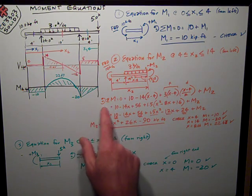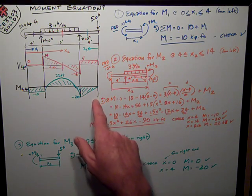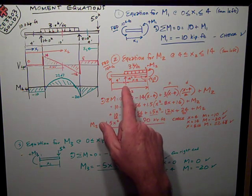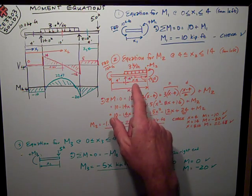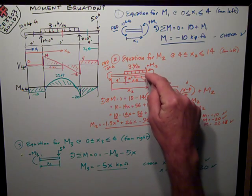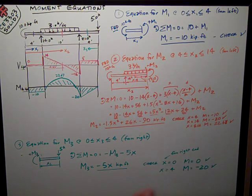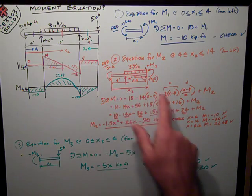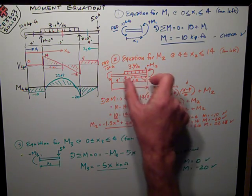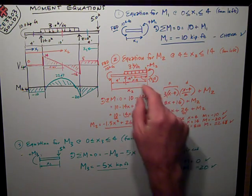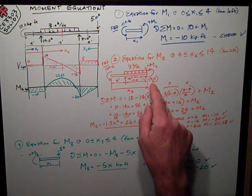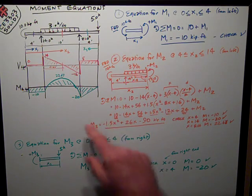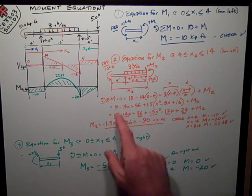Now I'm ready to write a moment equation. Sum of moments equal to 0. Counterclockwise is positive for this equation. So I get 10 minus my reaction, 14, because it's clockwise, times x minus 4. The moment arm, I'm summing moments about this point here where I've cut a section. Plus, because it's counterclockwise, 3 kips per foot times x minus 4, that's the amount of that force, times its moment arm, which is half of x minus 4, so x minus 4 over 2. And then plus m2. I'm going to do all the math, expand it out. I get this equation.